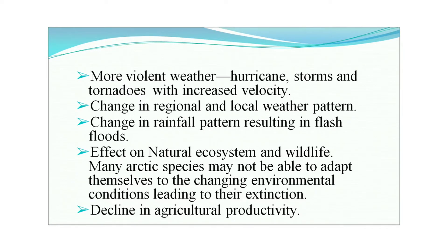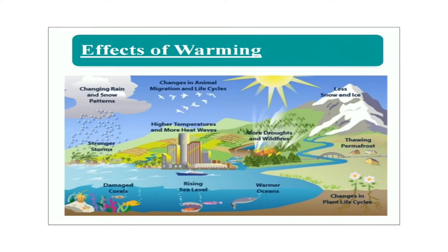Further consequences include change in regional and local weather patterns, change in rainfall patterns, effects on natural ecosystems and wildlife — many arctic species may not be able to adapt to the changing environment and may perish — and decline in agricultural production. A pictorial depiction shows ice caps melting, spring arriving earlier, warming of the atmosphere, more drought and wildfires, and thawing of permafrost — the glaciers that were permanently in an ice stage are getting affected.